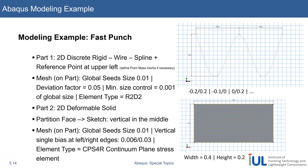Let's take a look at the Abaqus modeling example, Fast Punch.